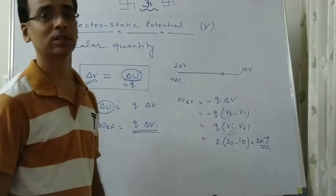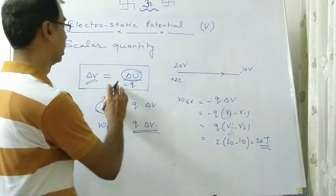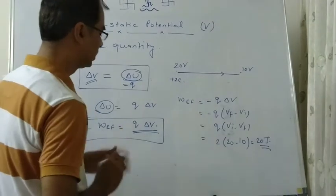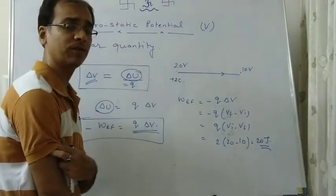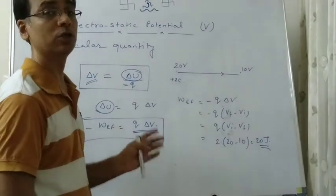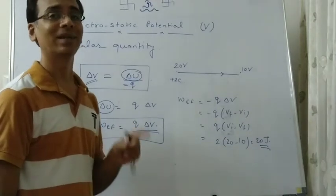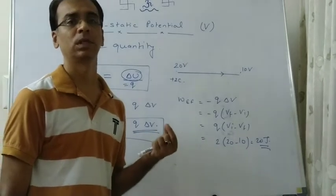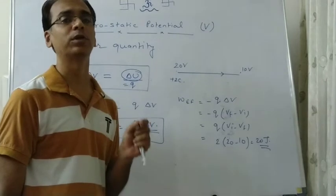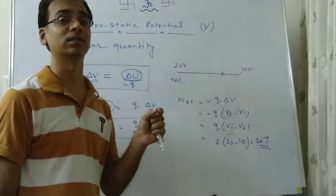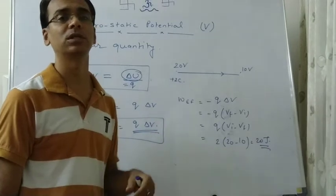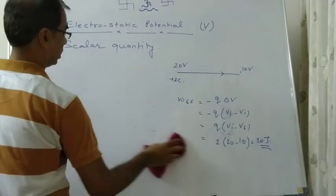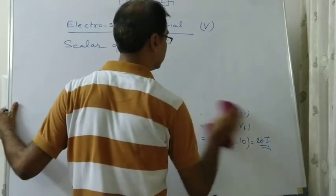These kinds of questions are very common and this formula is very important. One formula is work done equals Q times (V_initial minus V_final). Another formula for absolute potential at any point is 1 by 4 pi epsilon naught times Q by r. Remember, this value of potential holds only when we consider that potential at infinity is zero — that is our reference.